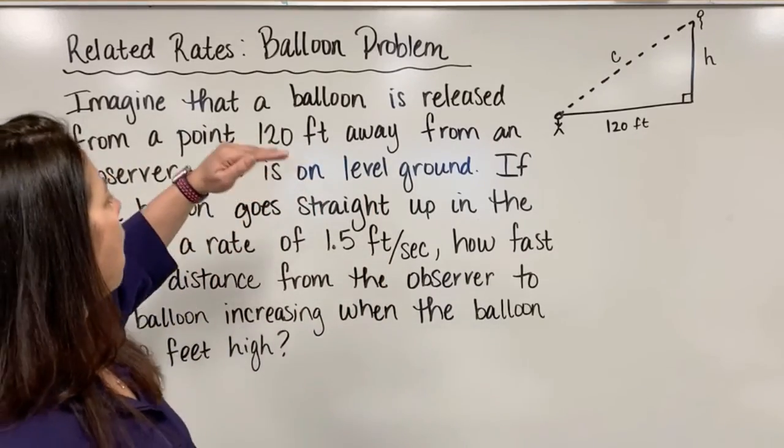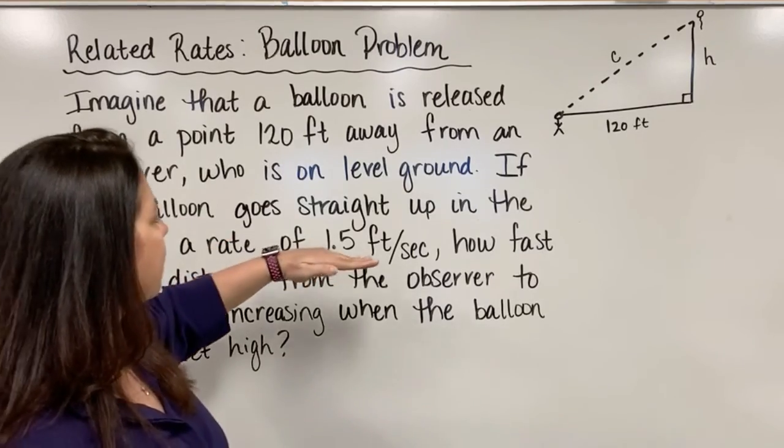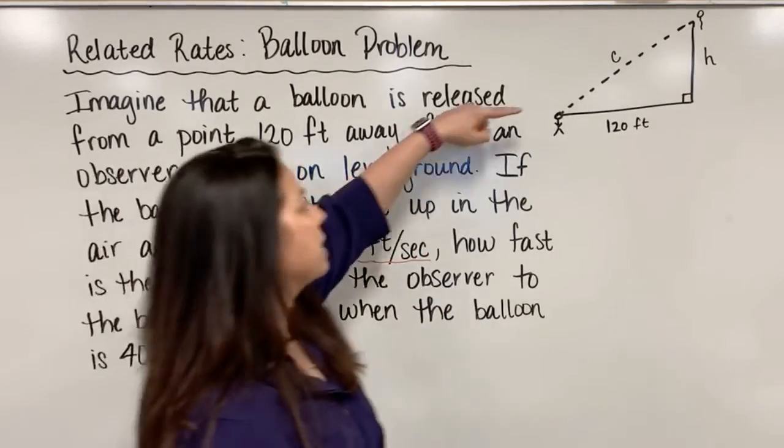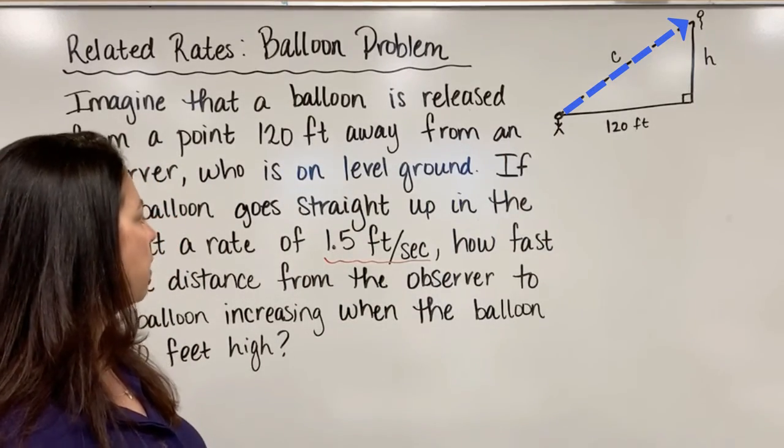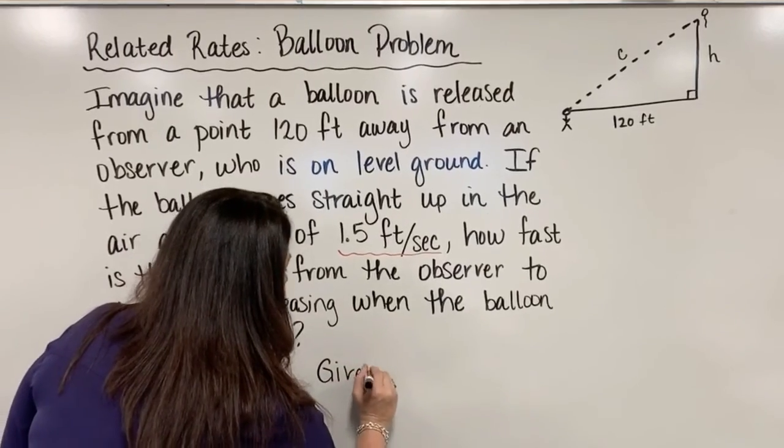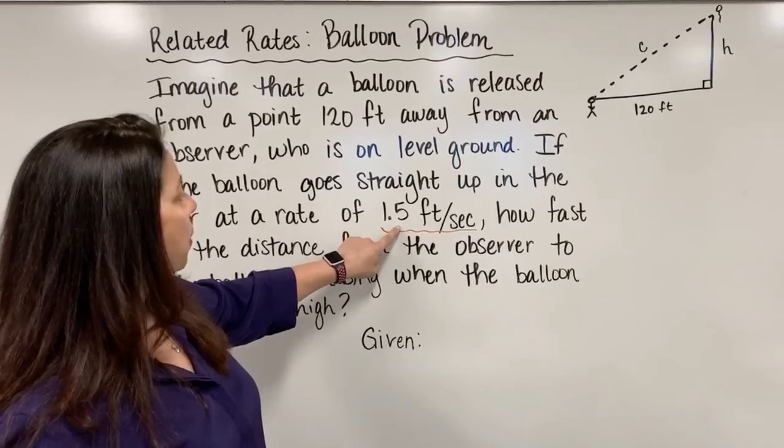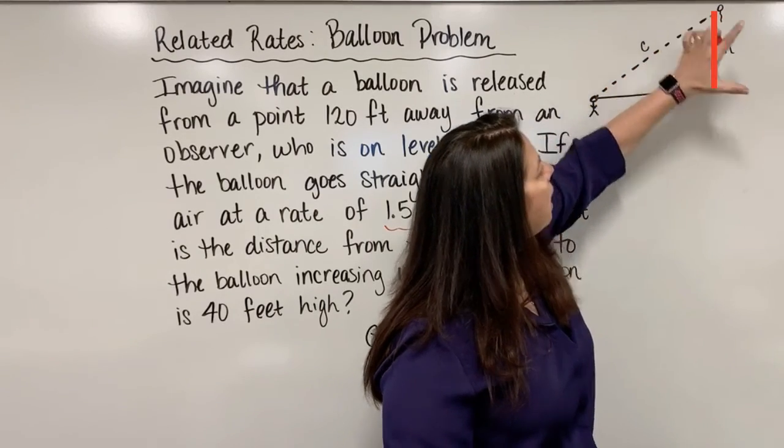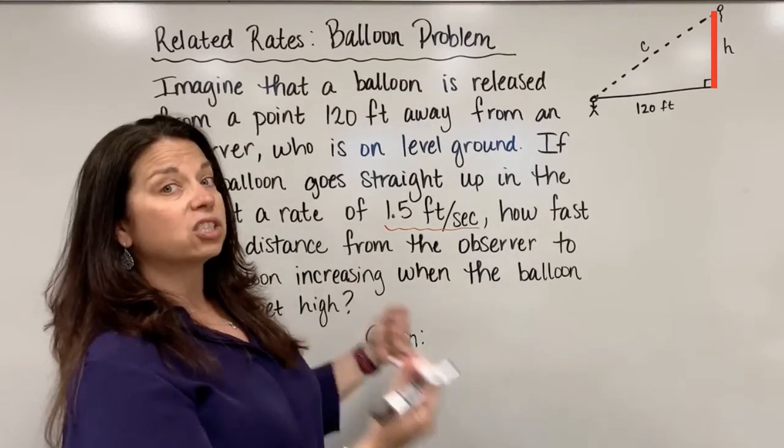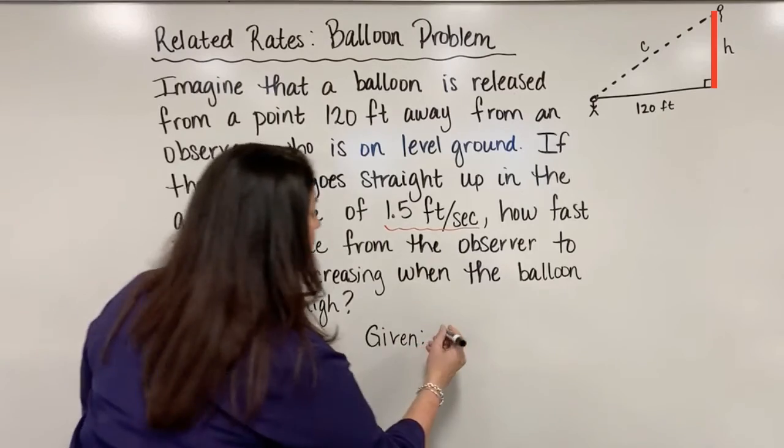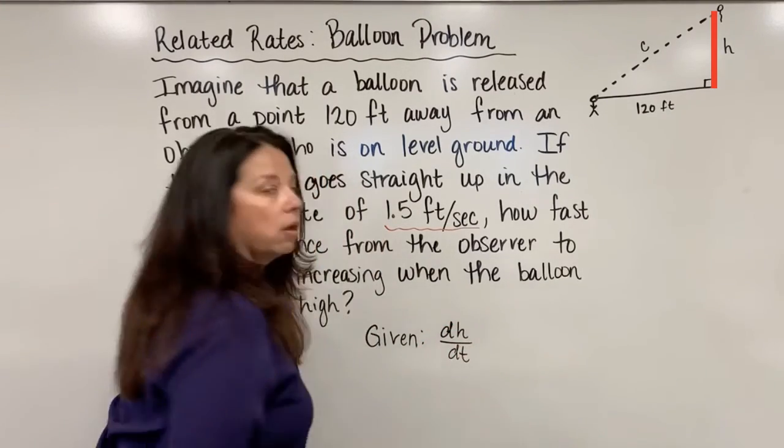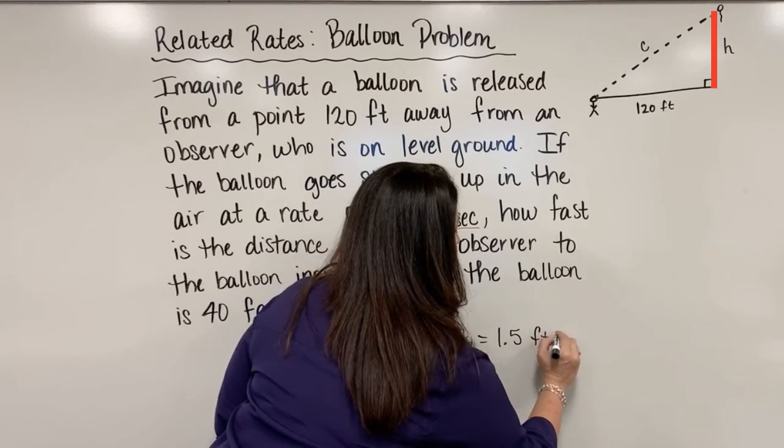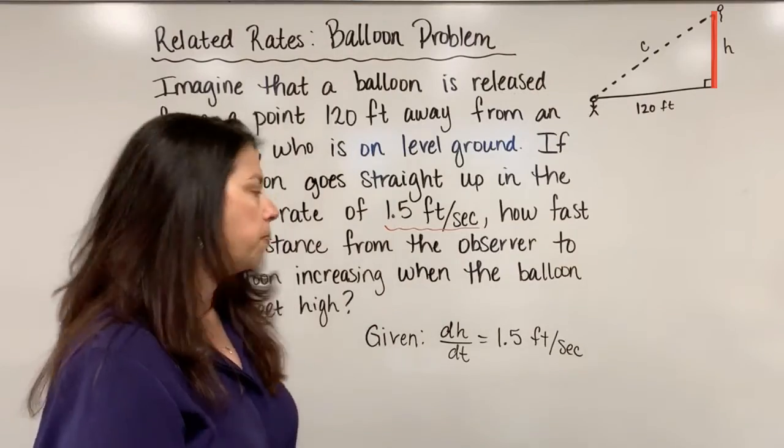Back to the problem, we know that this particular balloon is going straight up in the air at this rate of exactly 1.5 feet per second. What we don't know is how fast this distance between observer and balloon is changing. So here's what we're given: the balloon going straight up at 1.5 feet per second. If we know this length between the ground and the balloon is called H, we can talk about its rate of change relative to time as dH/dt, and we're given that that value is exactly 1.5 feet per second.